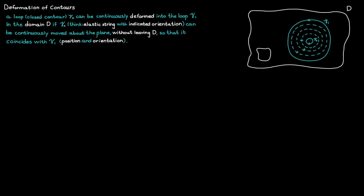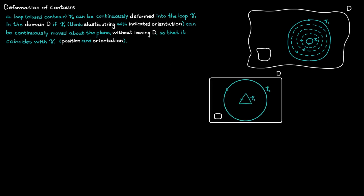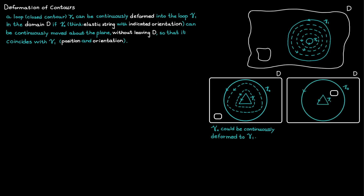You can mold and deform a loop to your liking. For example, if you have two loops inside some domain D which has a hole in the bottom left corner, where the first loop gamma zero is a circle and the second loop is a triangle, there's nothing stopping you from deforming gamma zero to make it more and more like a triangle, and moving it closer to gamma one. But in a domain where the hole has been moved, you will have to cross the hole at some point during deformation, which means you could not deform gamma zero into gamma one since you had to leave domain D.